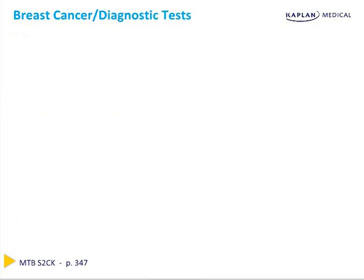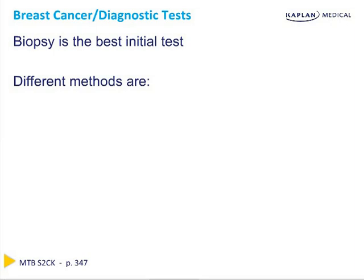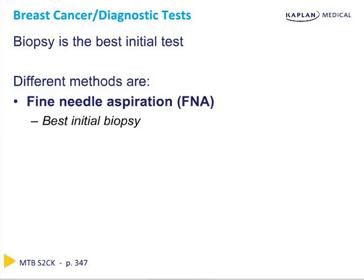Once a breast mass is identified, the best initial test is biopsy to obtain cells for microscopic examination. From least to most invasive, the three biopsy methods are fine needle aspiration (FNA), core needle biopsy, and open or surgical biopsy. FNA is the least invasive and has a very small false positive rate of about 2%, but the false negative rate can be as high as 10% since it only samples a small amount of tumor cells.